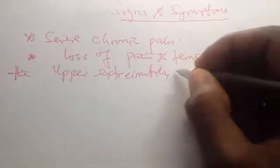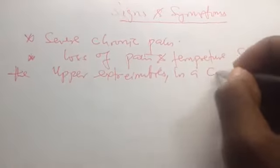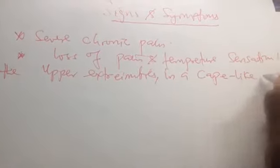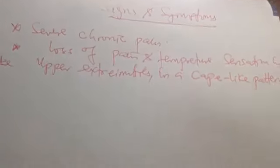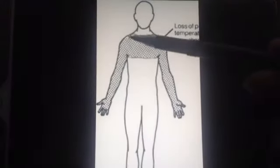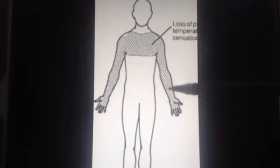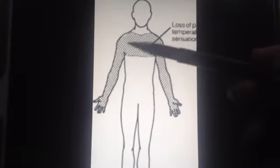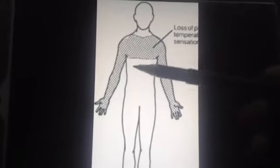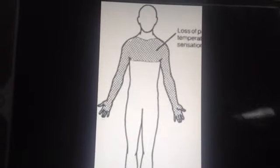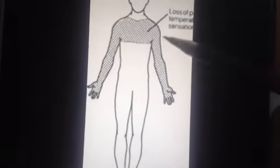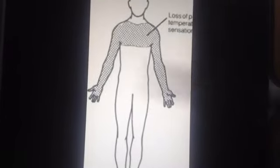That's why it's known as a cape-like pattern. Let's see what the cape-like pattern looks like - this is the only area that will be affected. The patient will lose temperature and pain sensation around this area, but the trunk and the rest are spared, especially if the cervical region of the spinal cord is affected.